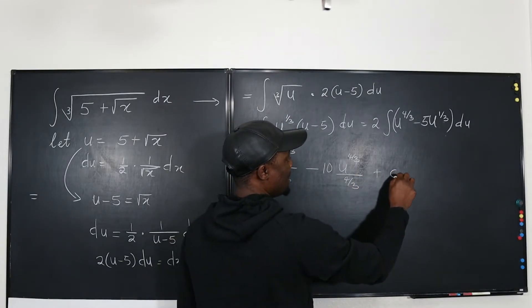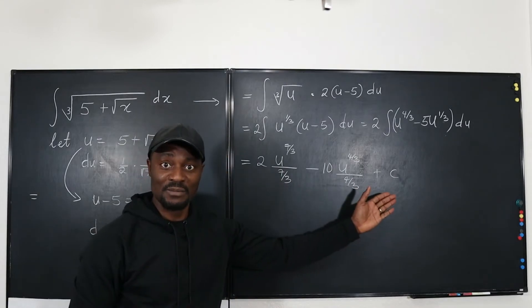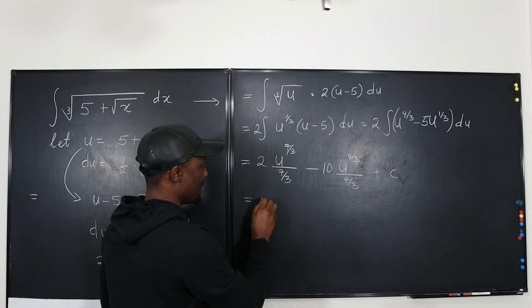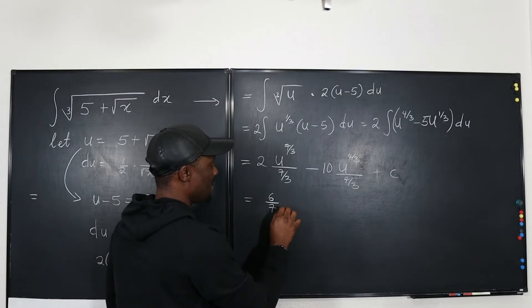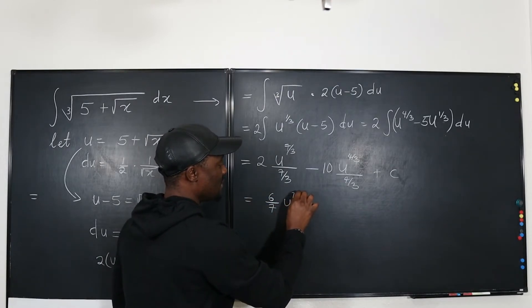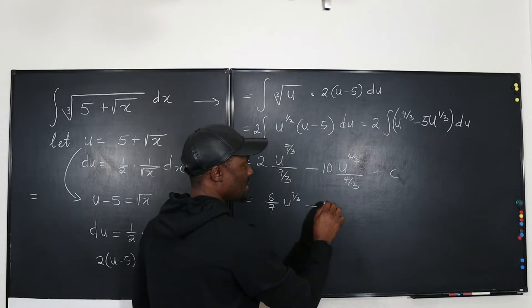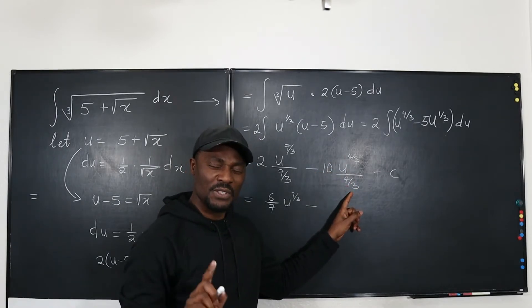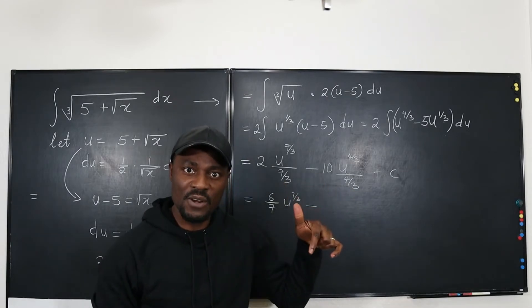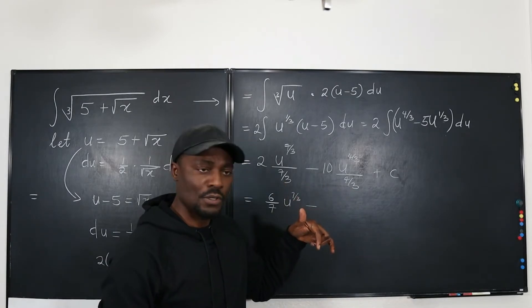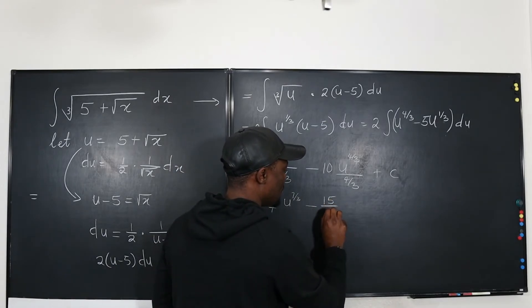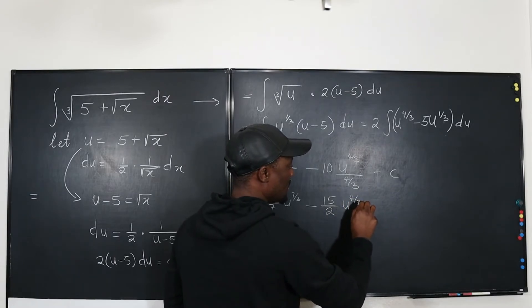So all I need to do is algebra. That's all that's left. So if I flip this I'm going to end up with 6/7 u to the 7/3 minus if I flip this I'm going to end up with 30/4 - 30/4 is 15/2. Interesting that's 15 over 2 and this is going to be u to the 4/3 plus c.